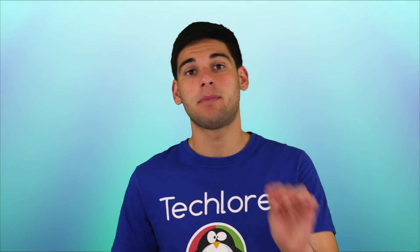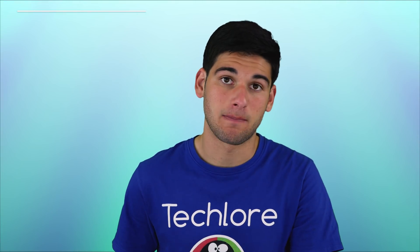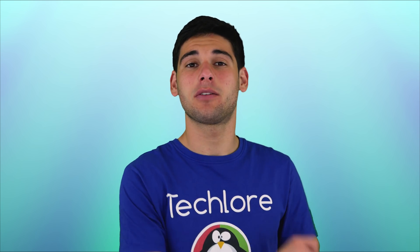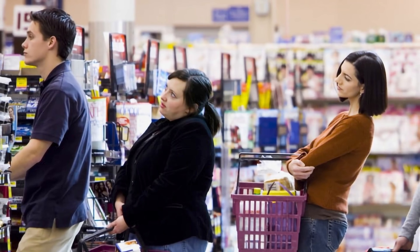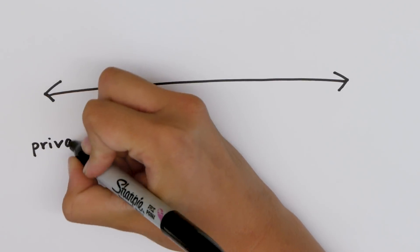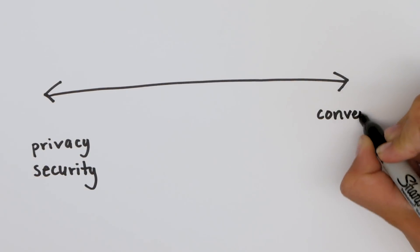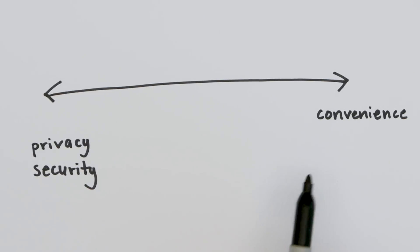Every lesson will be set up this way to better allow you to draw a line — a line between what, you may ask? Well, I like to call it the convenience line. In general, the more private and secure you wish to become, the more time and work you're going to have to put in. There's just no way around this.